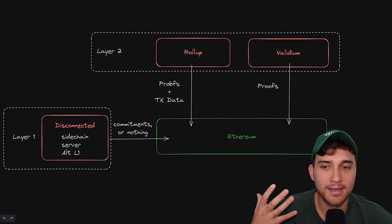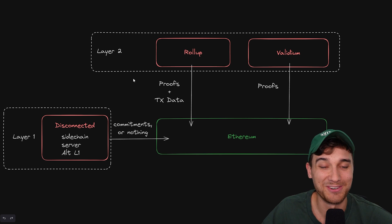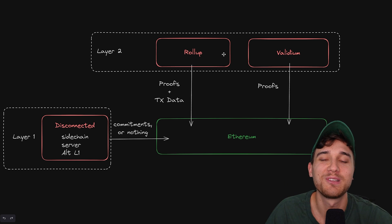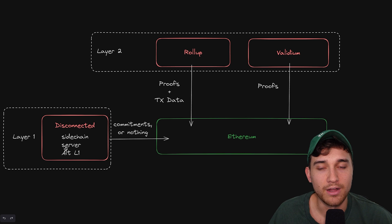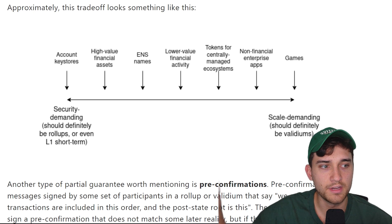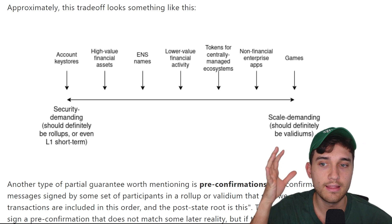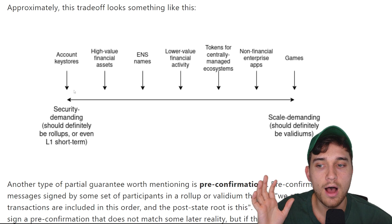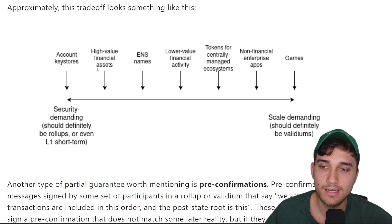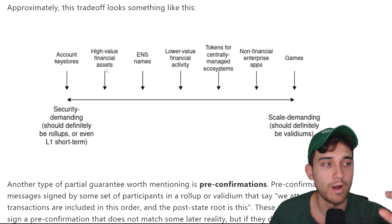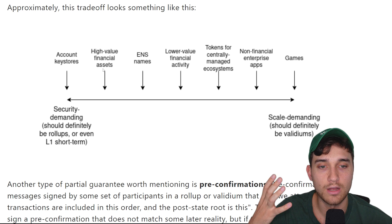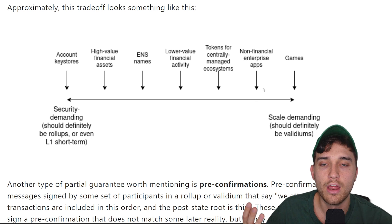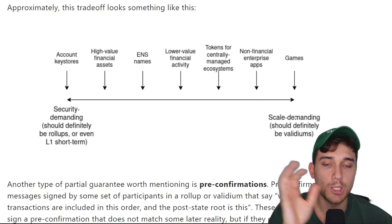Vitalik makes the point that you can also be in the middle ground between these categories — not strictly a rollup, not strictly a validium, and not strictly an alt L1. Given that scale of security and scalability, he places real-world examples of where applications would want to fit. On the high-security end, things like account key stores and high-value financial assets. On the other end, fully optimized for scalability and low costs, things like games, social media applications, and non-financial enterprise applications belong in something like a validium.